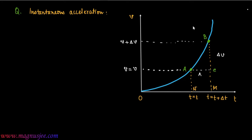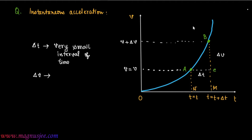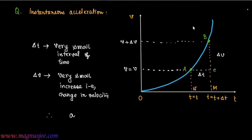We can draw line AC, where the length of BC is delta v and the length of AC is delta t. Here, delta t is a very small interval of time — the time taken by the body to move from A to B. Delta v is the very small change in velocity of the body as it travels from point A to B. Therefore, instantaneous acceleration aᵢ is equal to delta v divided by delta t.